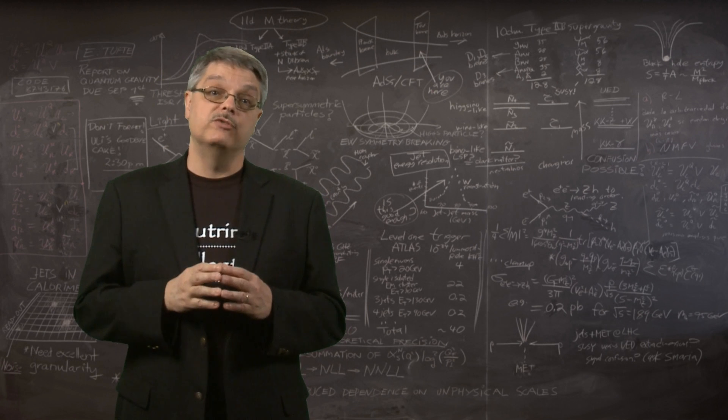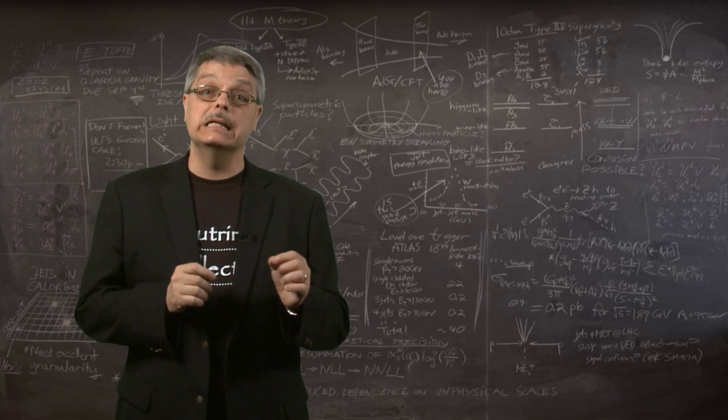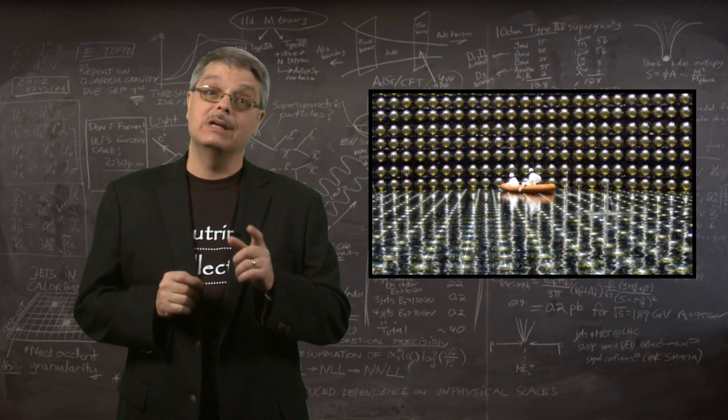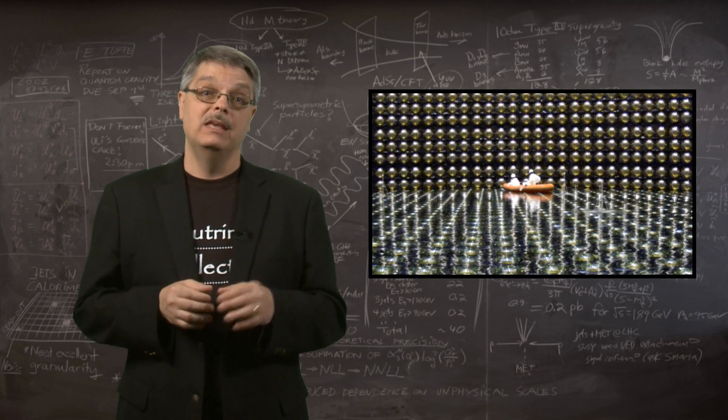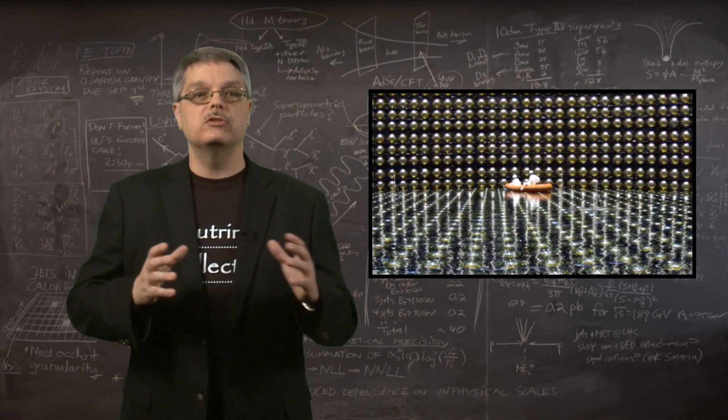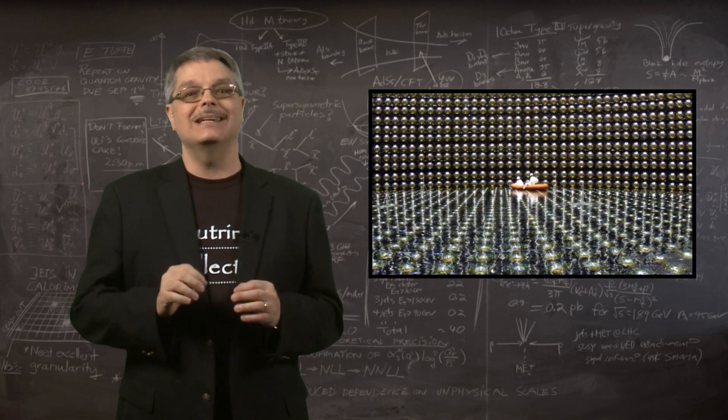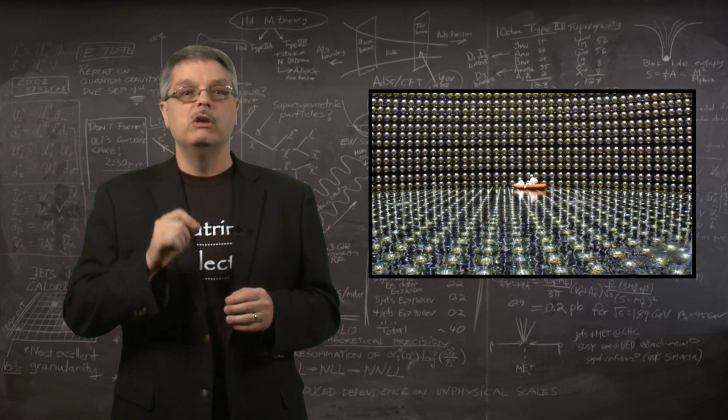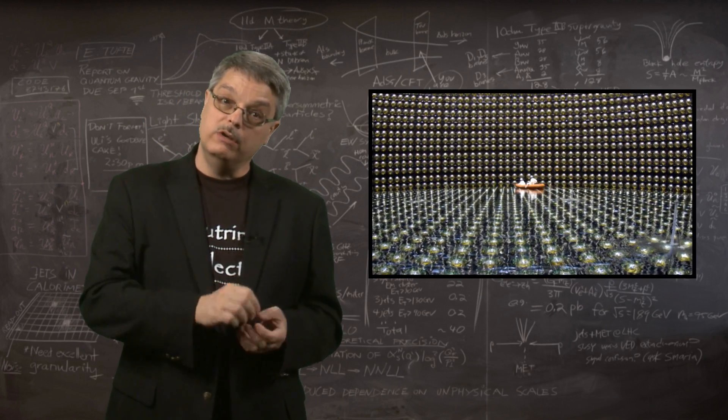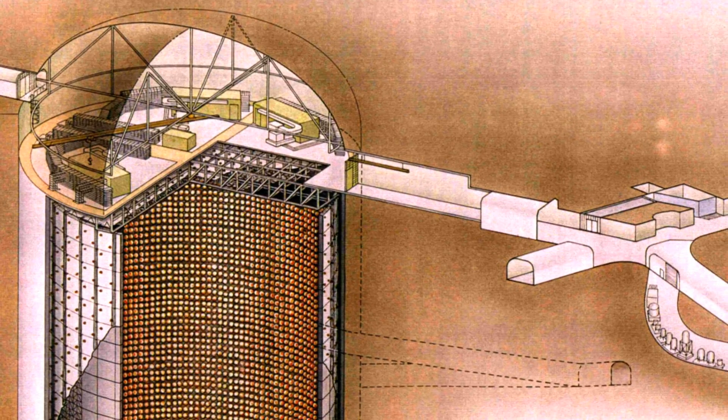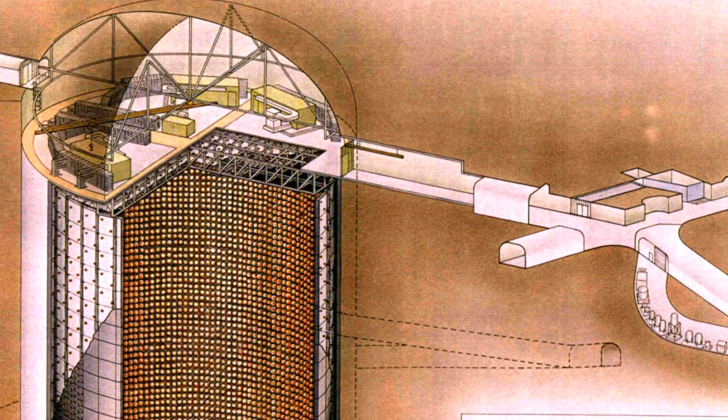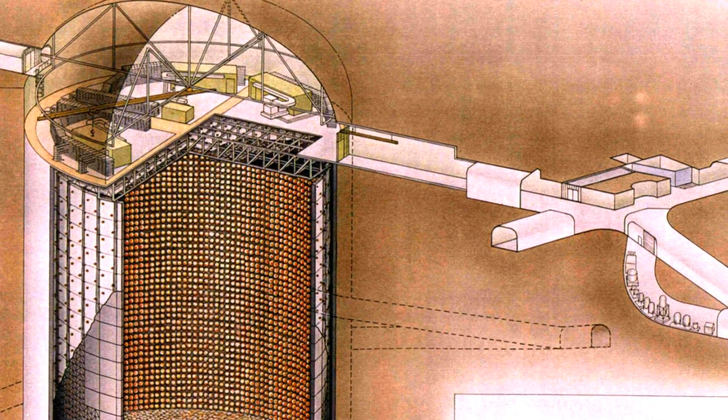The first compelling evidence for neutrino oscillations came in 1998, using the Super Kamiokande experiment in Japan. This detector is a huge underground cavern filled with 50,000 tons of water, surrounded by detectors called phototubes. Rare neutrinos would interact in the water and give off a blink of light. Using that blink of light, you could identify the trajectory of the neutrino.